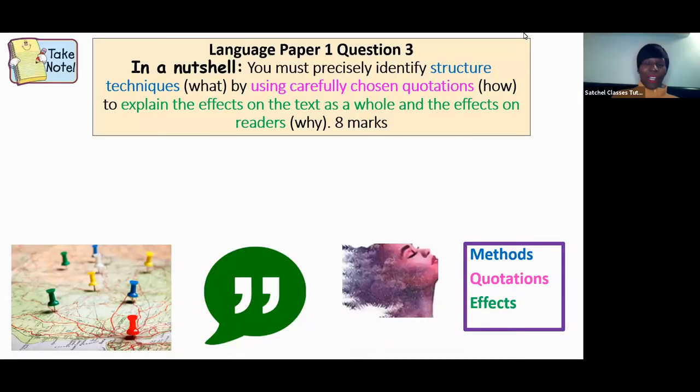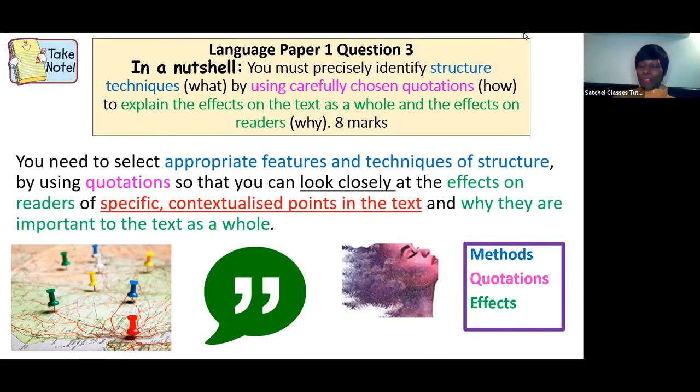For the last part, we're going to have a look at structure. As we've said earlier, structure features are very different from language features. This question asks you to look at the appropriate features and techniques of structure, not language, using quotations and explaining why this is used at specific contextualized points in the text. You're kind of pinpointing and mapping what the writer is doing at the beginning, middle, and end, how it shifts and develops, and how it keeps your interest. Remember you're thinking FINCHES, and you're not thinking about descriptive language, imagery, or word class.